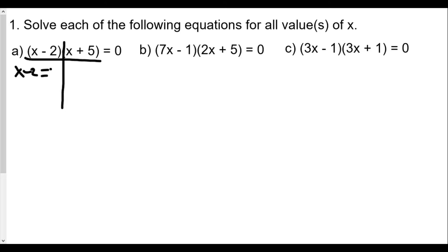So we have x minus 2 equals zero and x plus 5 equals zero. Add 2 to both sides, we have x equals 2. Subtract 5 on both sides, x equals negative 5.